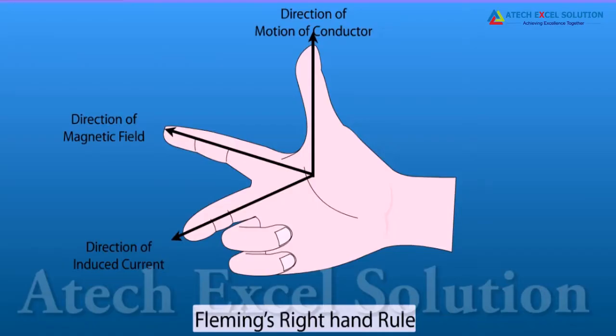To know the direction of induced current we need to apply Fleming's right hand rule. Stretch the thumb, forefinger and middle finger of your right hand so that they are perpendicular to each other. If the forefinger indicates the direction of magnetic field and the thumb indicates the direction of motion of conductor, then the middle finger will show the direction of induced current.